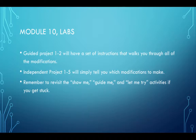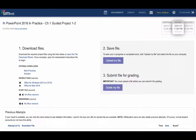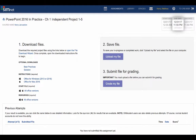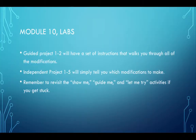You have two projects to do for your labs in this module. These projects will ask you to download a starter file, modify them, and upload them. Guided Project 1-2 will have a set of instructions that walks you through all of the modifications. Independent Project 1-5 will simply tell you which modifications to make. Remember, if you find yourself getting stuck on the projects, go back into the SIM book and practice with the Let Me Try exercises.